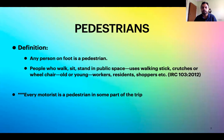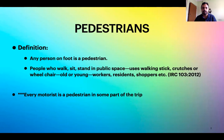By definition, a pedestrian is any person on foot — people who walk, sit, stand in public space, use a walking stick, crutches, or wheelchair; old or young, workers, residents, shoppers, etc. This definition is given in IRC 103:2012, where IRC stands for Indian Road Congress, which provides codes for various parameters of transportation engineering. As already said, every motorist is a pedestrian in some part of the trip because a motor vehicle will not take you to your exact destination.